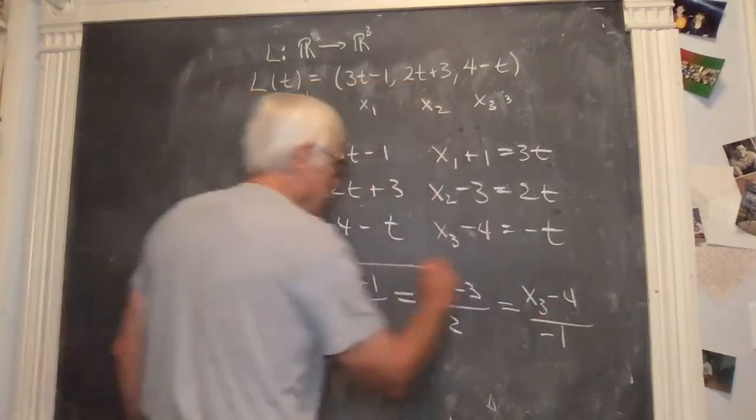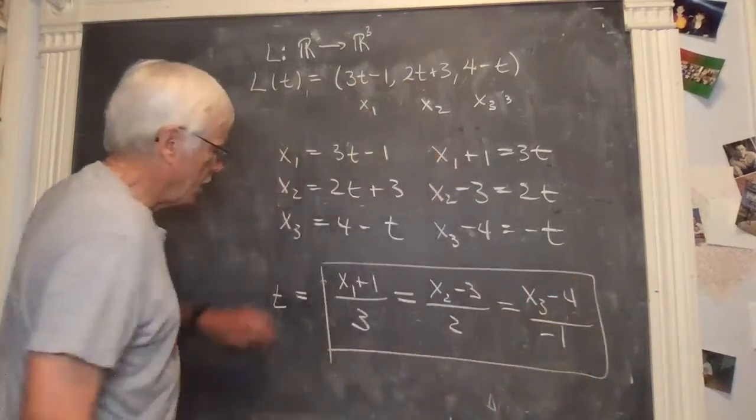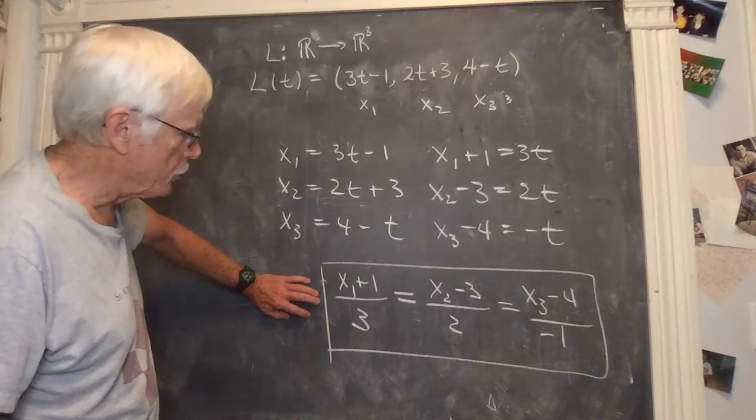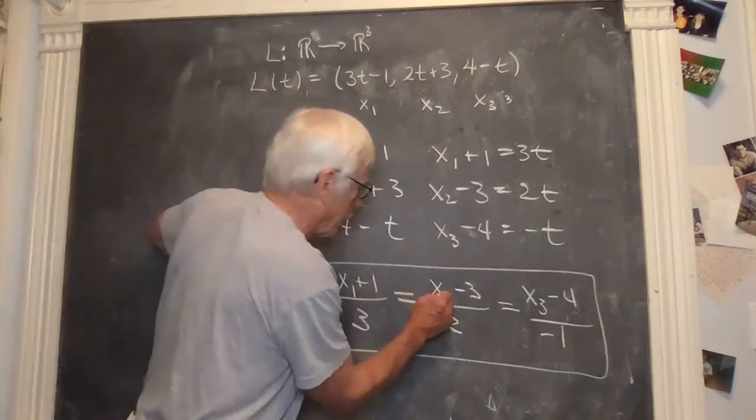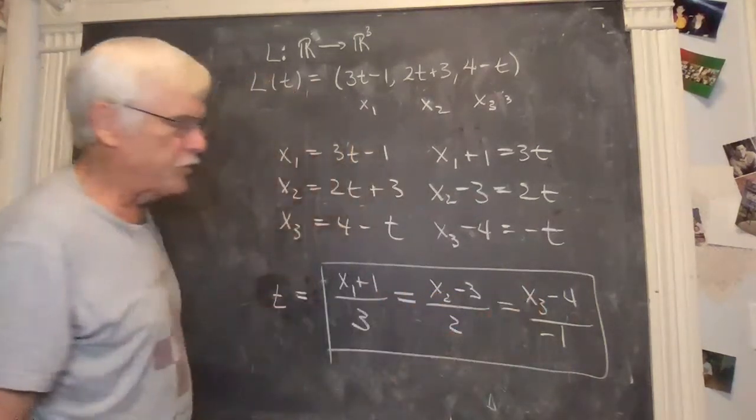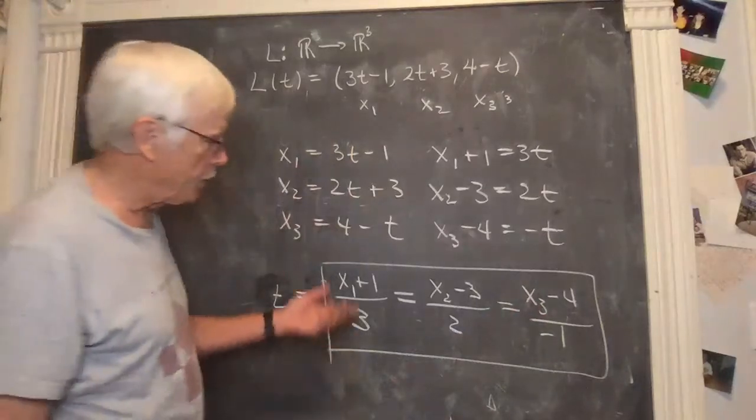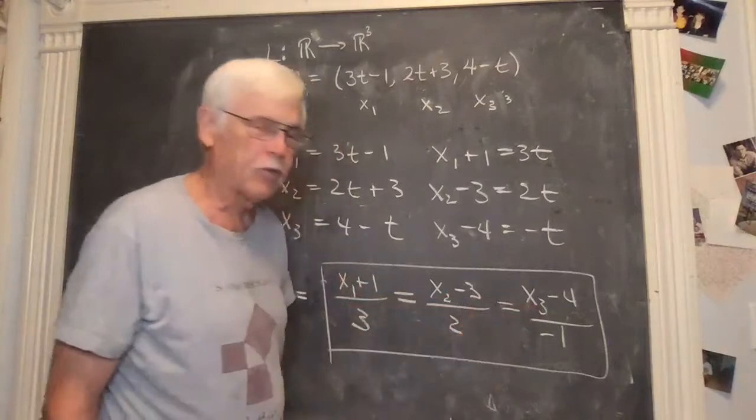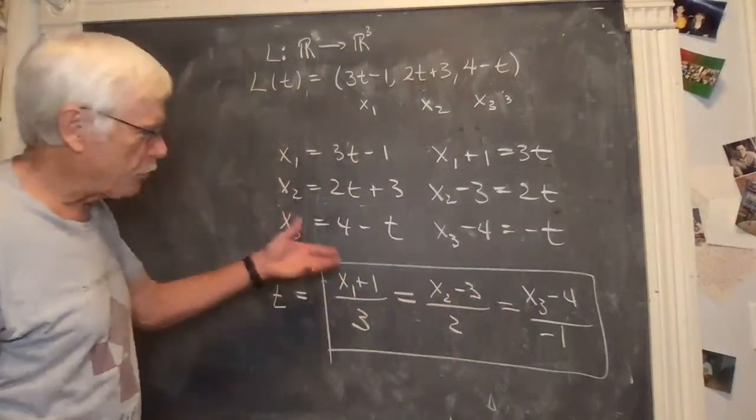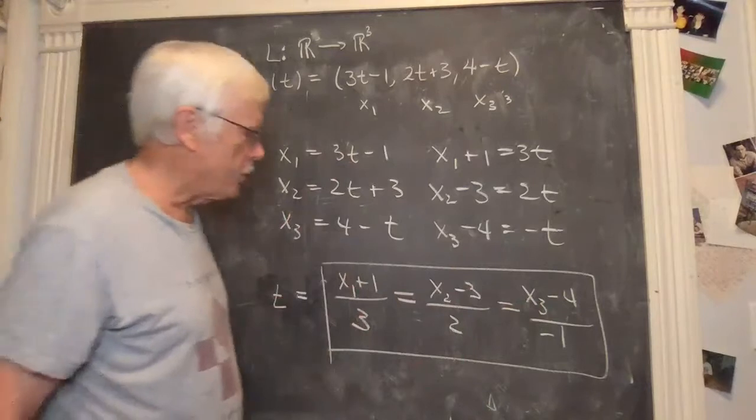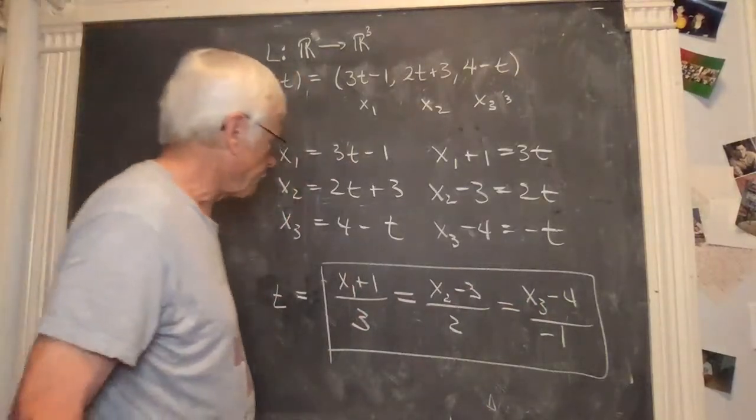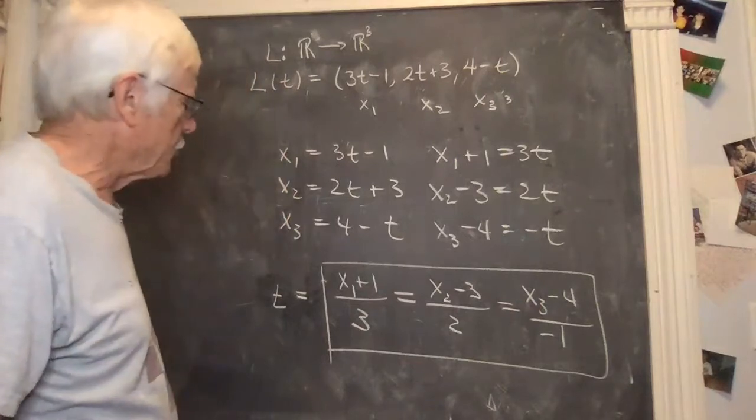So t is equal to, from the first one, x1 plus 1 divided by 3. But t is equal to, from the second one, x2 minus 3 over 2, solving this equation for t. And it's the same t. And that's equal to x3 minus 4 over minus 1. So here is a Cartesian equation, no t in this. Here is a Cartesian equation using only x1, x2, x3.